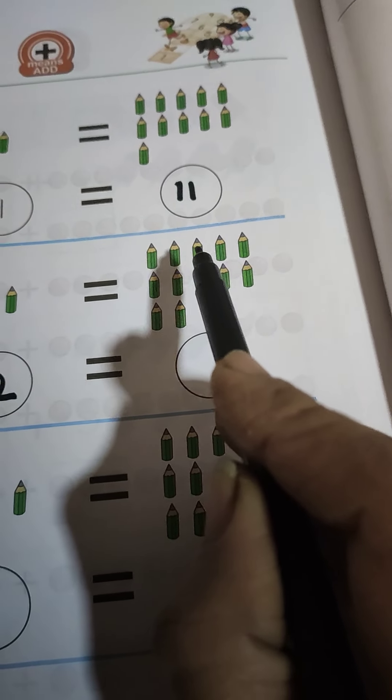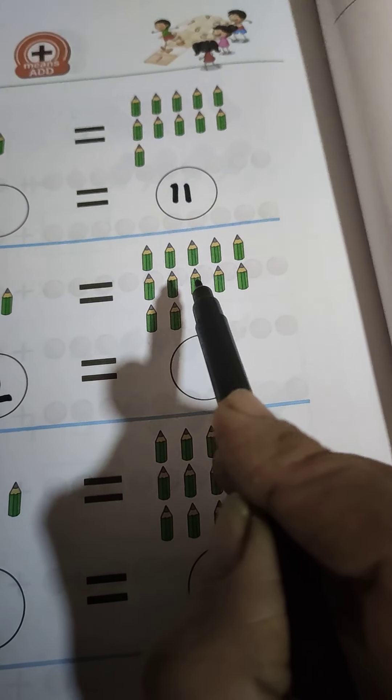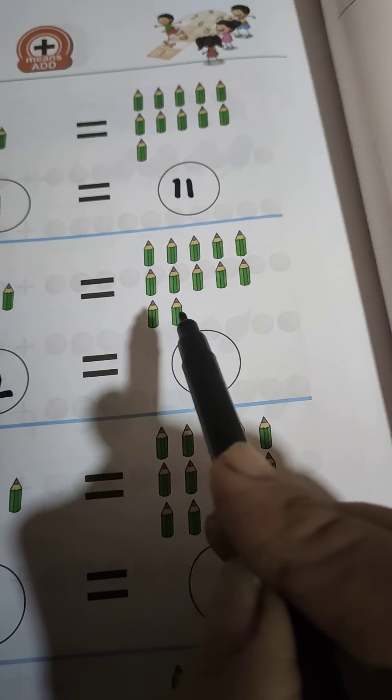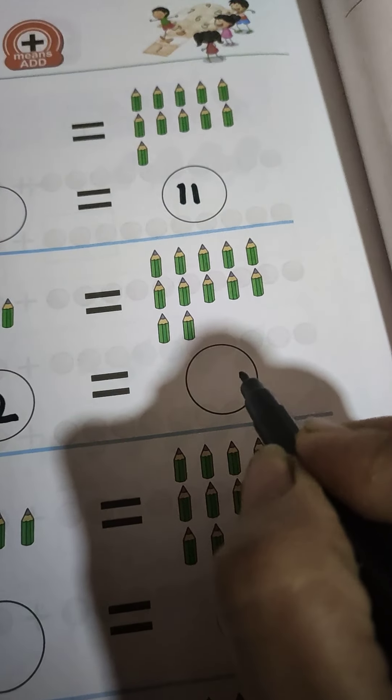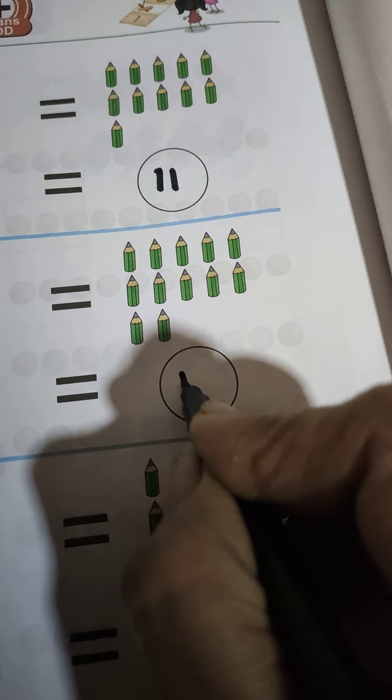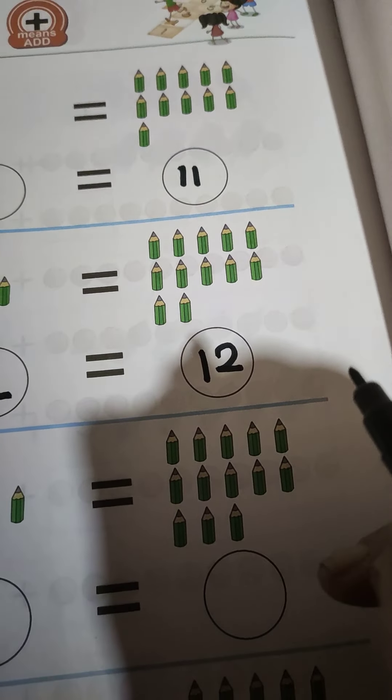1, 2, 3, 4, 5, 6, 7, 8, 9, 10, 11, 12. How many pencils? 12 pencils. So write over here 12. 12. Okay.